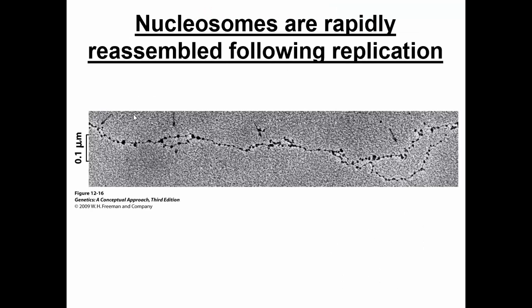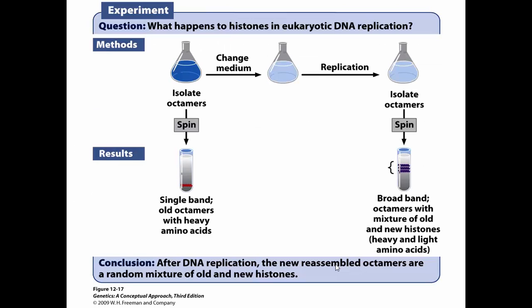This slide shows that nucleosomes disassemble and reassemble very quickly after DNA replication occurs. Looking at the different replication bubbles, you can see that the beads-on-a-string histones are still present. The histones had to release, or at least loosen from the DNA, to allow polymerase to replicate it. But since we still see them as the bubble is expanding, the inference is that the histones dissociated and reassociated to the DNA very shortly after replication.